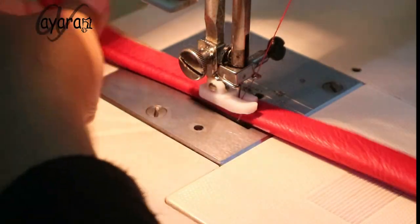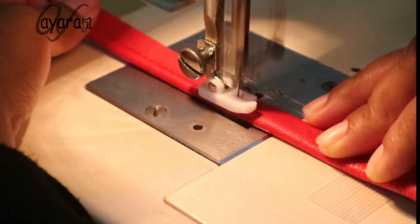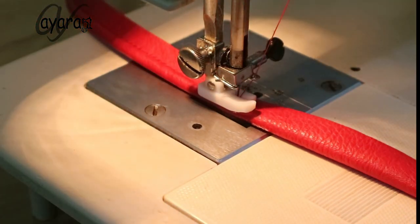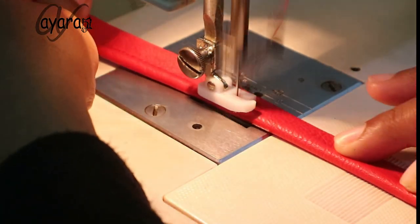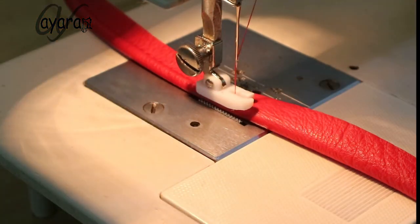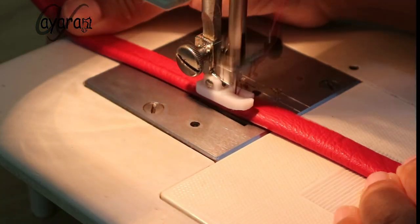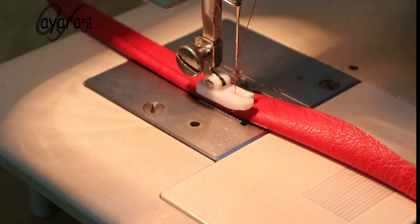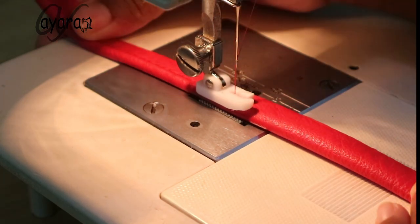This is how we make piping. To prepare the piping first - if you're already confident, you can go straight to the fabric. You don't need to sew it separately.